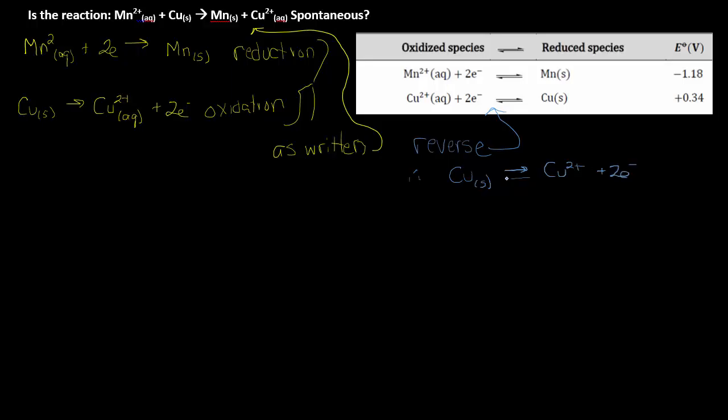This means that I have to reverse the copper reaction because in this case it looks like the copper is oxidized. This will change the standard cell potential of copper to negative 0.34.